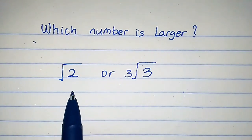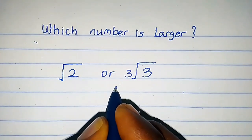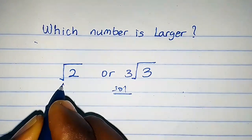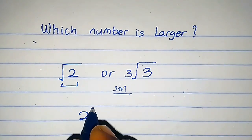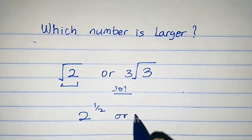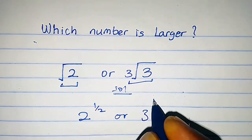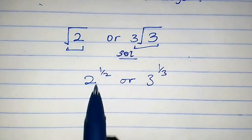Which number is larger? Is it square root of 2 or cube root of 3? We can write square root of 2 as 2 raised to the power 1/2, or we can write cube root of 3 as 3 raised to the power 1 over 3.